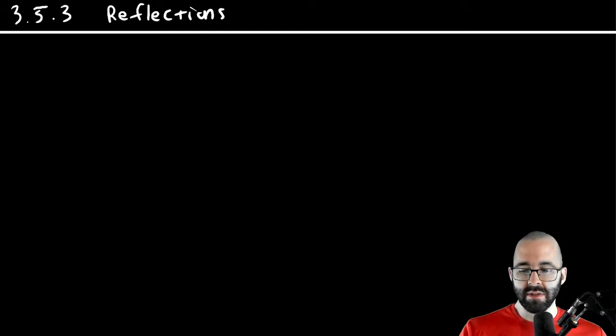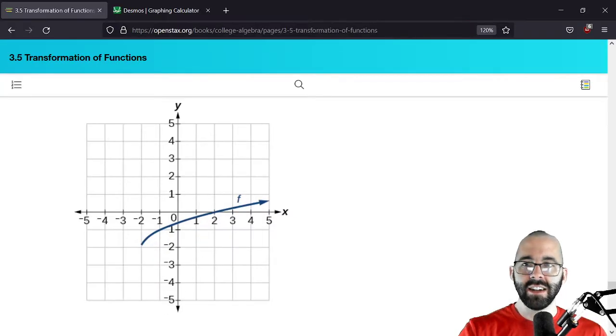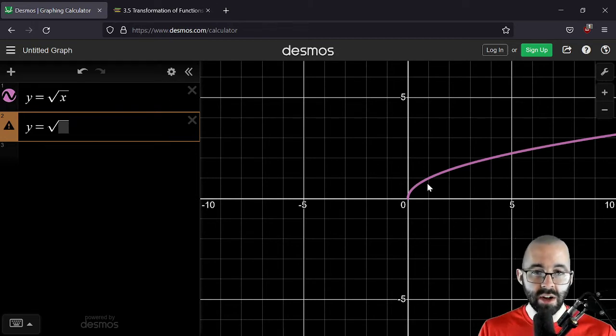Let's look at a graph. In this graph over here, this is the square root function. This is a toolkit function.